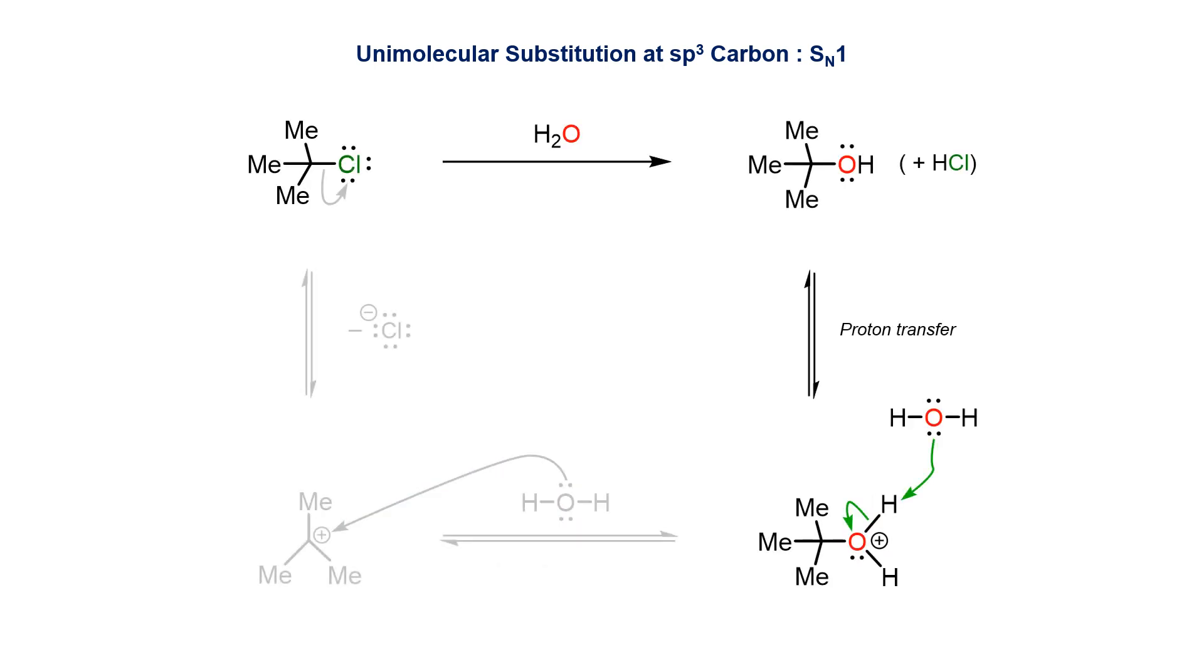The last step in this process involves the water solvent deprotonating the acidic oxonium species in a fast acid-base reaction to give the alcohol product. The polar protic water solvent plays multiple roles in this solvolysis process, from facilitating the leaving group breaking off to acting as the nucleophile and then reacting as a base in the final step.